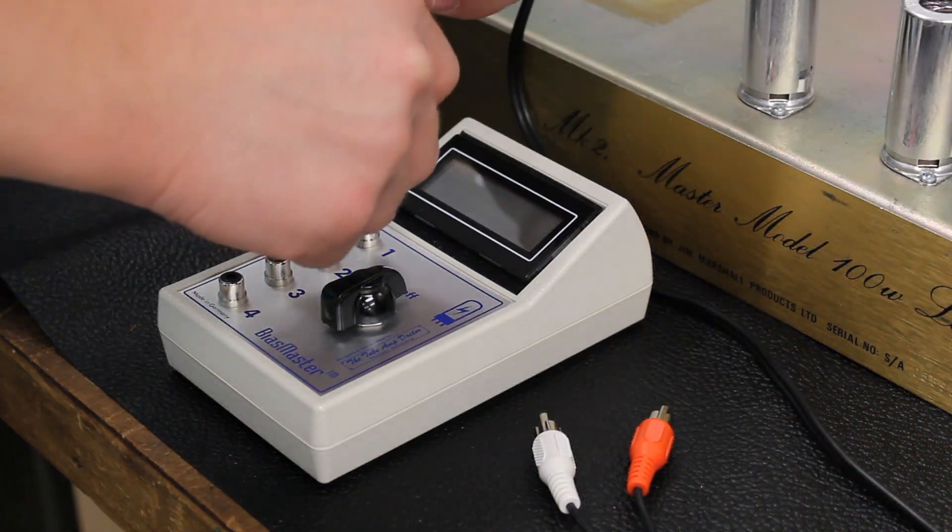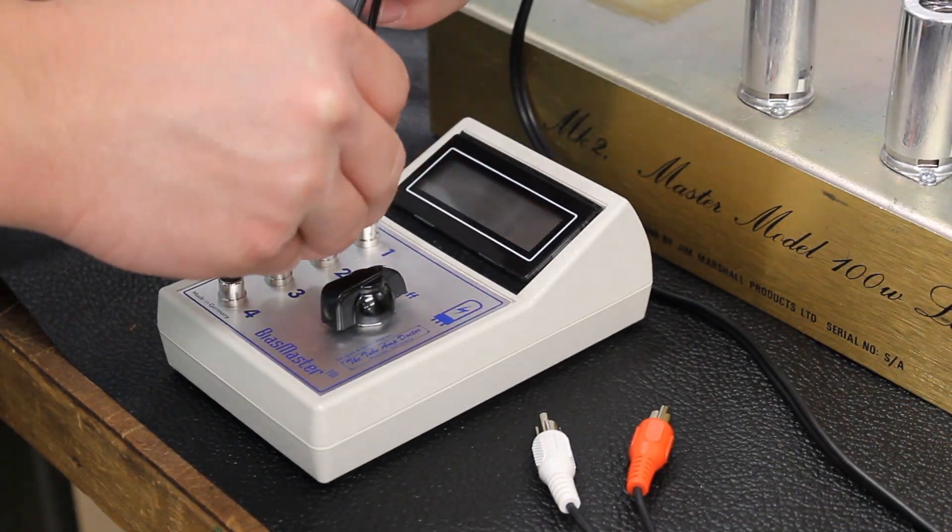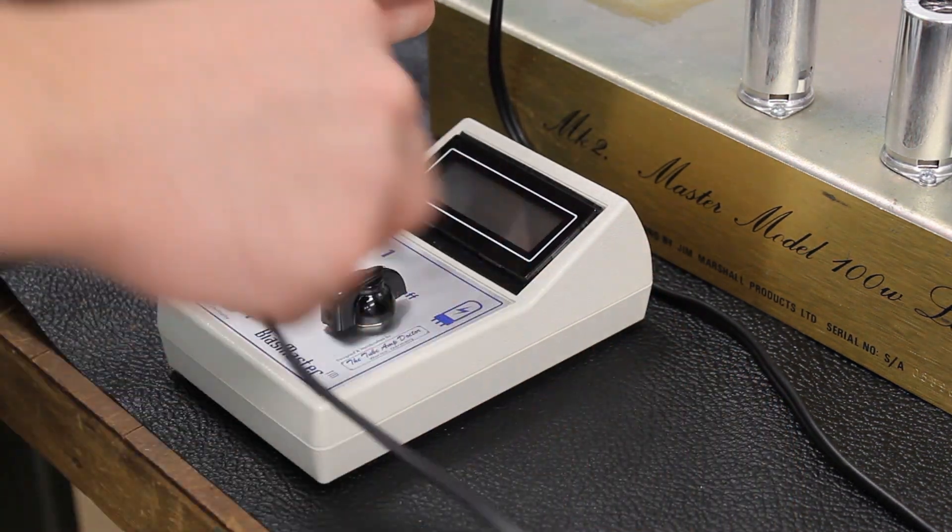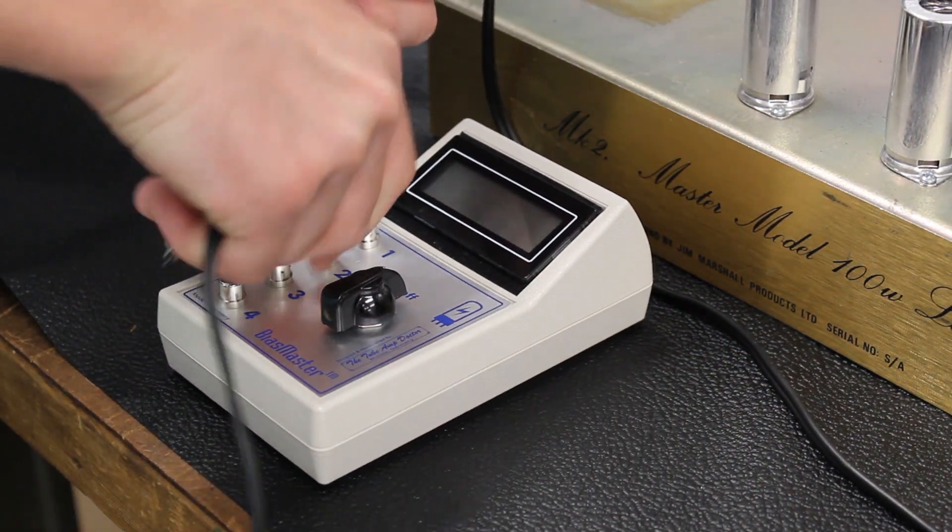Now it is time to connect the probes to your bias meter. We are using the tube amp doctor bias meter. The bias master allows you to monitor the bias current safely and easily.